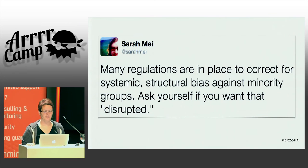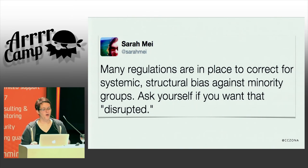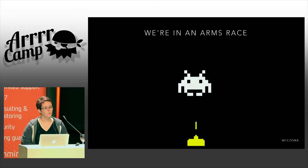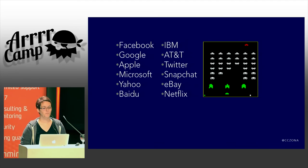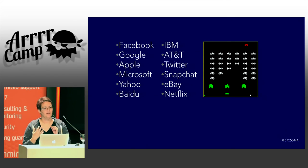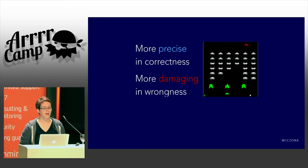Many countries' financial institutions and their regulators are paying close attention to these new models. As Sarah May says, many regulations are in place to correct for systemic structural bias against minority groups — we need to be asking ourselves, do we want that to be disrupted? Right now we are in a machine learning arms race. Facebook, Google, Apple, Microsoft — they have all made huge investments in companies doing this and in the underlying technology. They are making big bets in opaque intuitions. Deep learning is all about iteratively drawing intuitions at extremely fine-grained levels, which means they are growing more precise in correctness, but also more dangerous and damaging in wrongness. That's a dilemma for us to take seriously as developers.